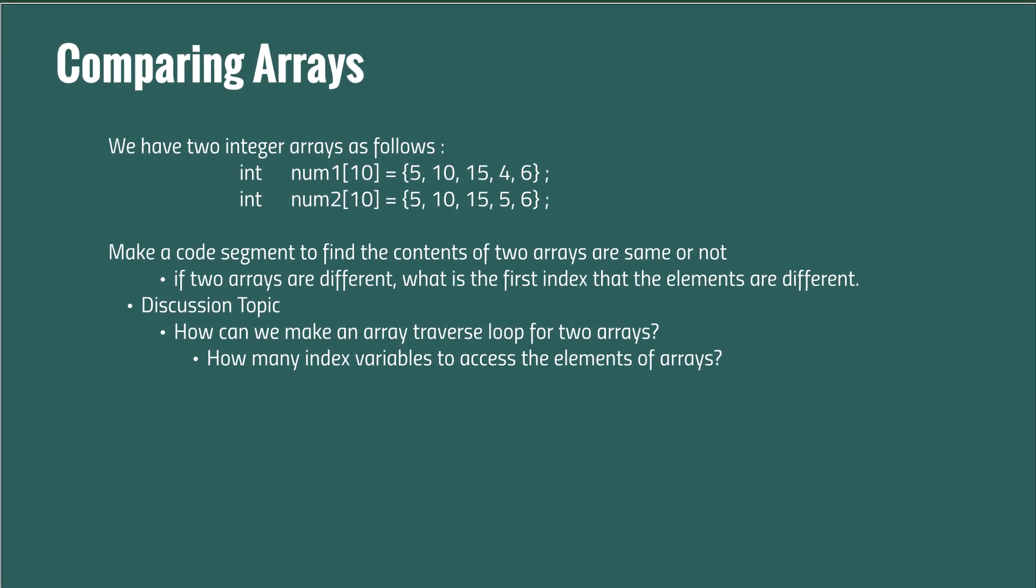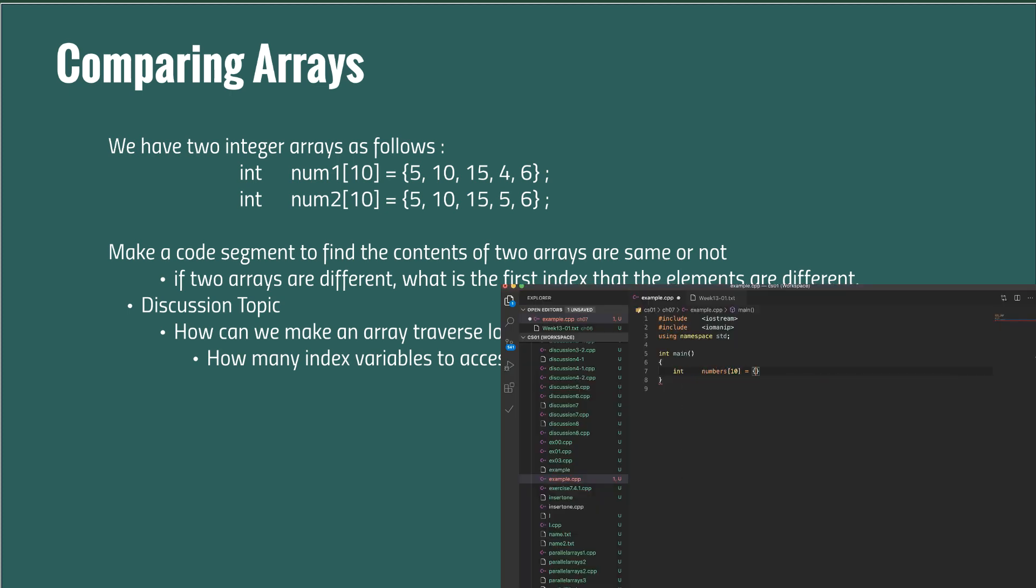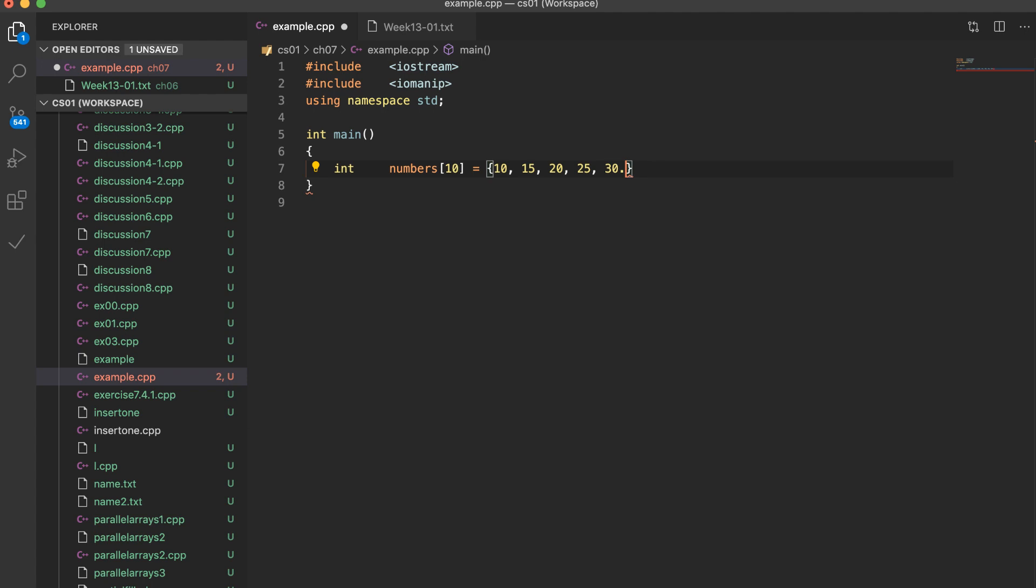Now let's make a code to compare two arrays. This program is to find the contents of two arrays are same or not. If two arrays are different, what is the first index that elements are not same?